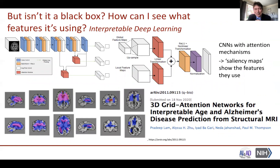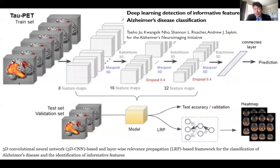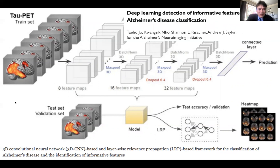One of the criticisms of deep learning is that it's a black box, so there's been a lot of attention on interpretable deep learning methods. This CNN has an attention module that tells you which parts of the image and which features were useful in determining whether someone had Alzheimer's disease. Andy Saykin and Tai Hojo at Indiana University have been reading in tau-sensitive PET data and feeding it into a neural network to identify the features or clusters of features most informative, then using this in new patients to identify whether or not they have AD.